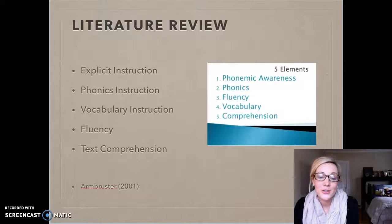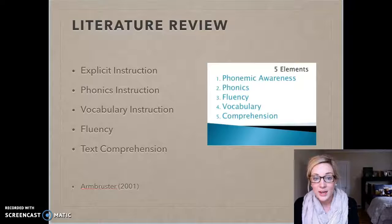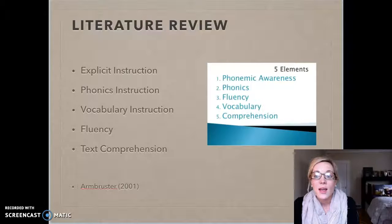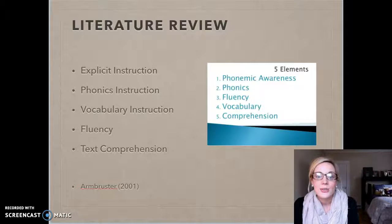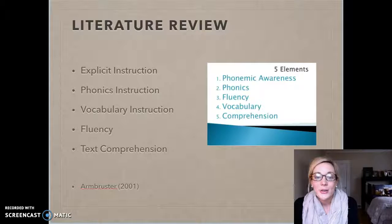Moving into the literature review, the National Reading Panel had done extensive research on the components of a highly effective reading program. There are five components necessary to build fluent and comprehensive readers. The first three — explicit phonics and vocabulary — really focus on how to read: can you identify sounds, can you identify blends, can you pick words apart? Fluency is the bridge of all of these standards. It merges students learning how to read with understanding what they're reading, or text comprehension. So fluency is a critical factor in determining overall comprehensive readers.